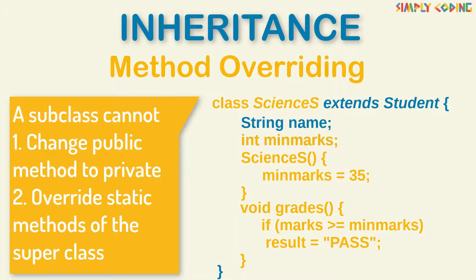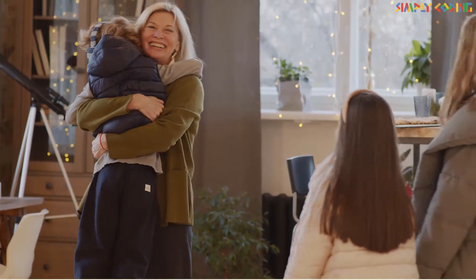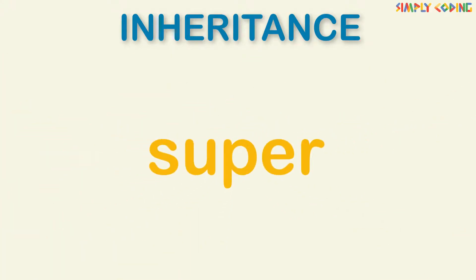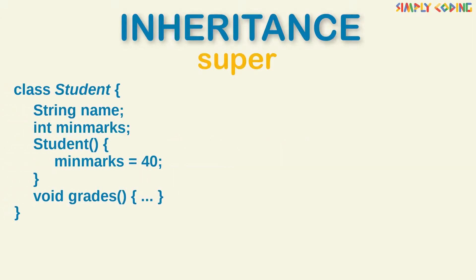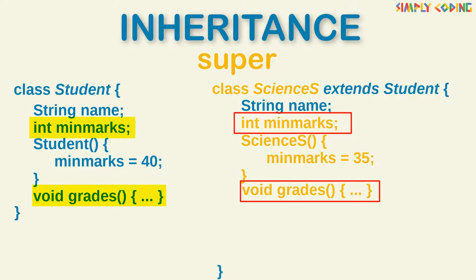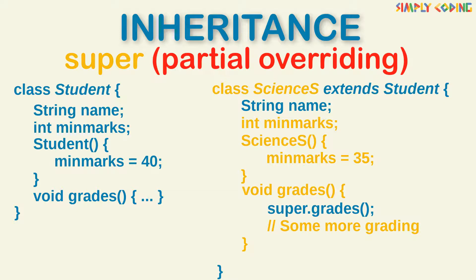Note that while overriding, a subclass cannot redefine a public method as private, and a subclass cannot override static methods of the superclass. Now, if you want to access the hidden parent class variables and methods, you can use the super keyword. Super is used to refer to the base or parent class. So if you call super.marks or super.grades in the derived class, it will access the base class variables and methods respectively. This enables partial overriding — where part of the original method implementation from the superclass is retained.